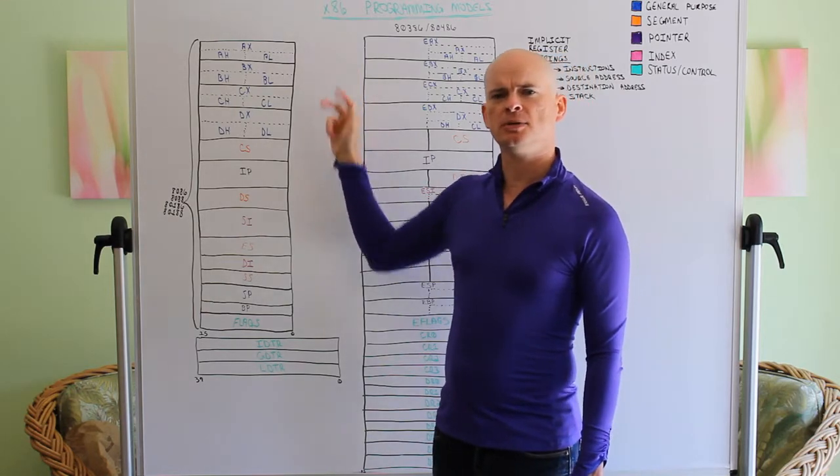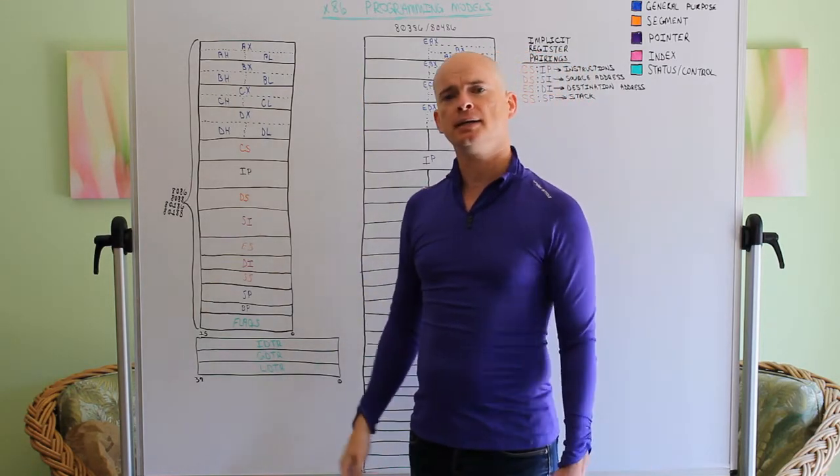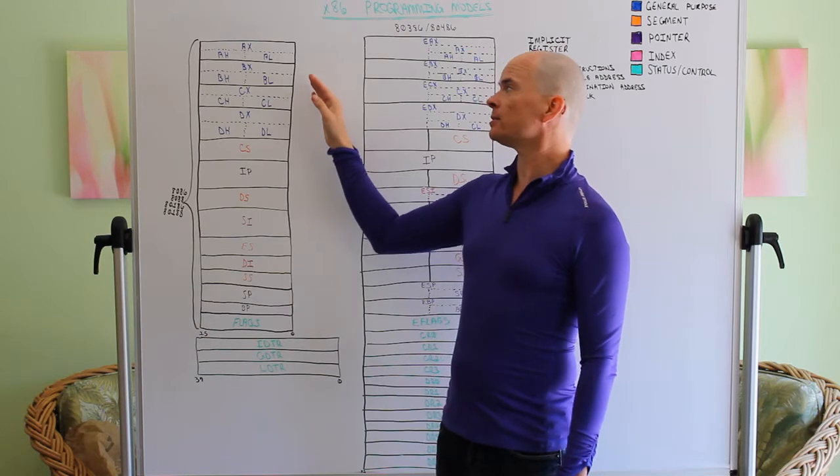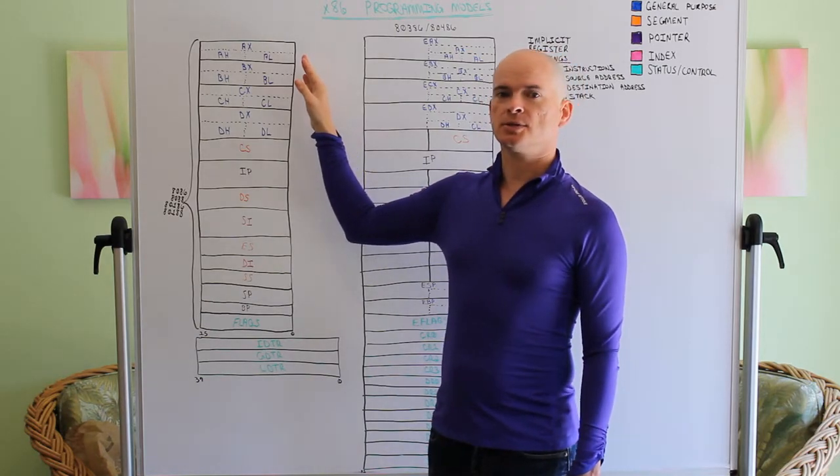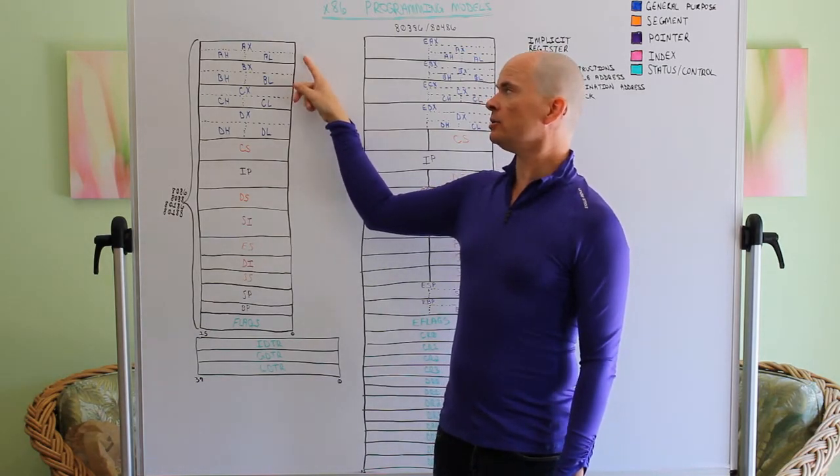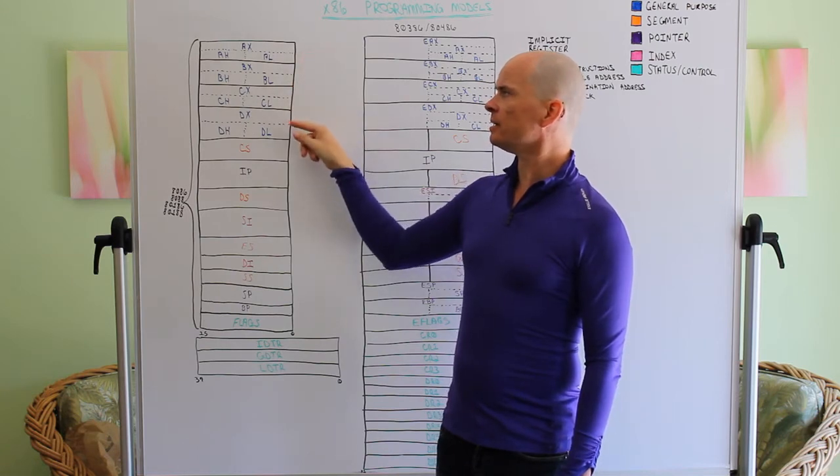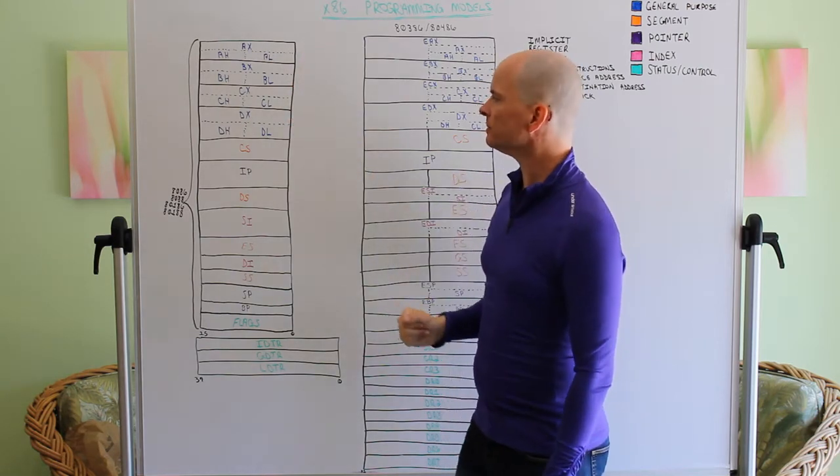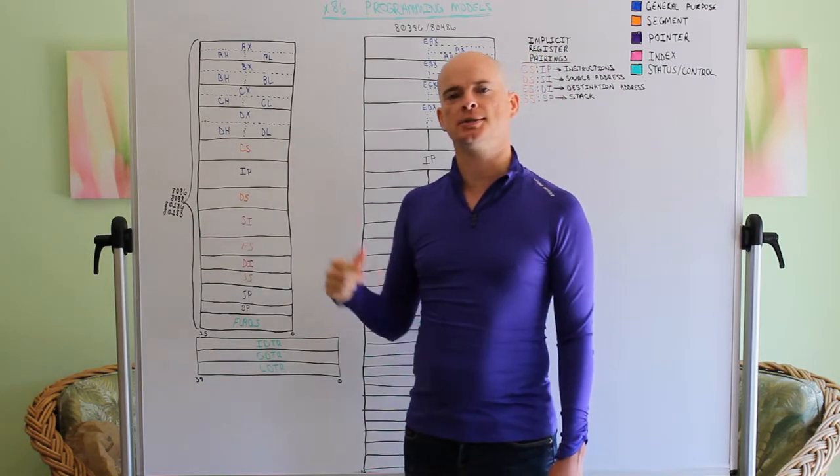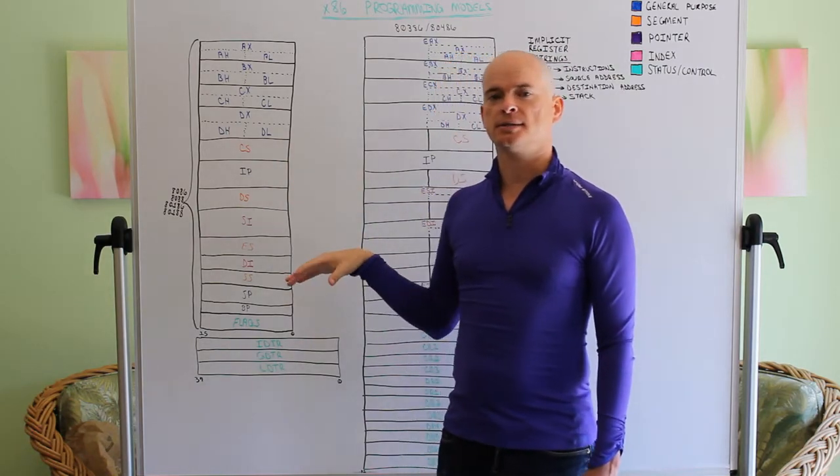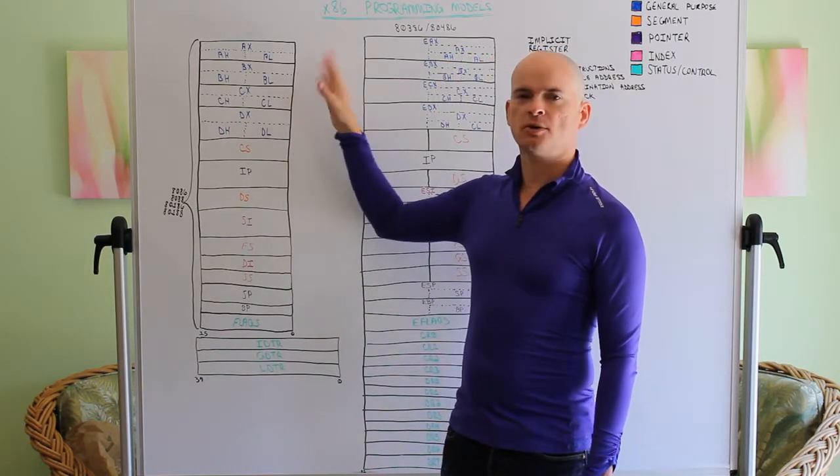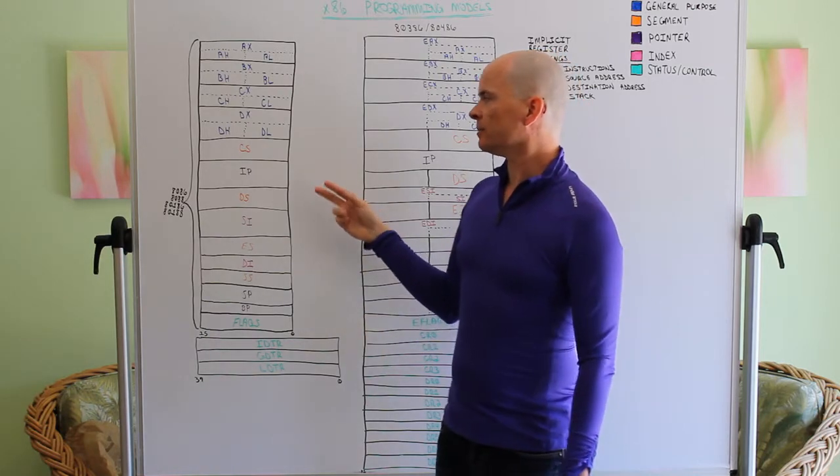These are general purpose, they can be used to do mostly anything. There are some instructions, such as multiply and divide, that will only let you use, I believe, AX and DX. But most of the instructions on the 8086 you can use these general purpose registers any way you see fit, generally.